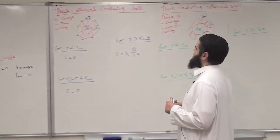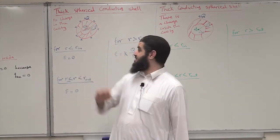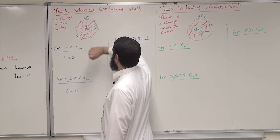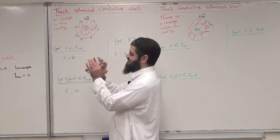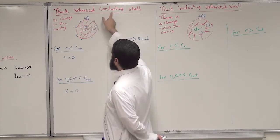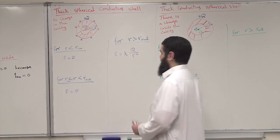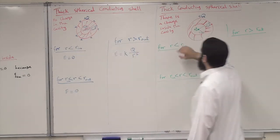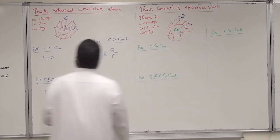Let us discuss now the thick spherical conducting shell. It has a certain thickness with inner radius r_in and outer radius r_out. It is conducting, and we put extra charge which is plus Q. We have a cavity which is vacant — no material, just empty space. The conducting material forms the thick spherical shell with an inner and outer radius. We will discuss two cases: one where there is no charge in the cavity, and a second case where there is a charge inside the cavity.